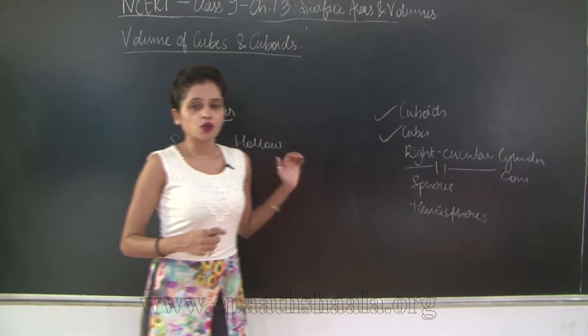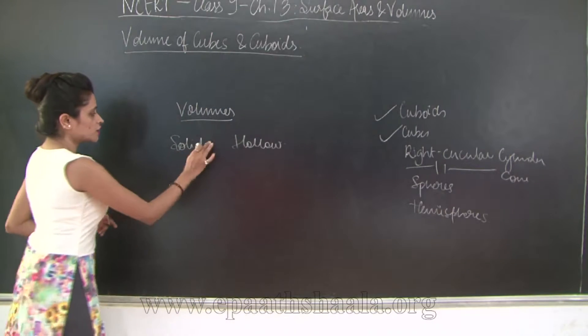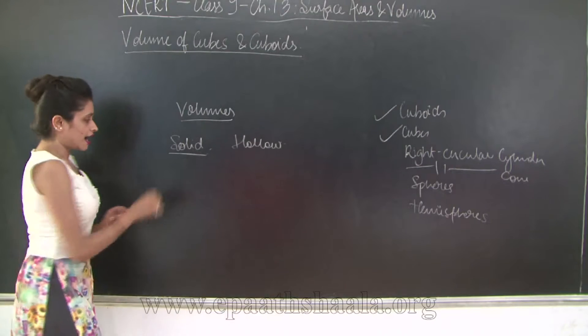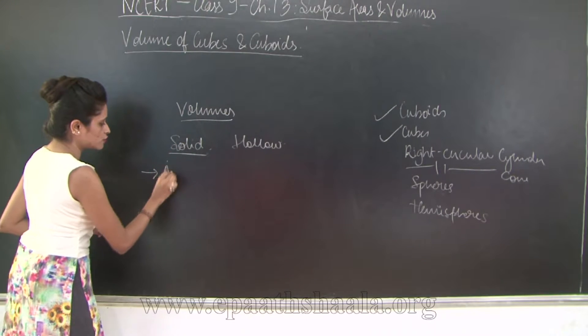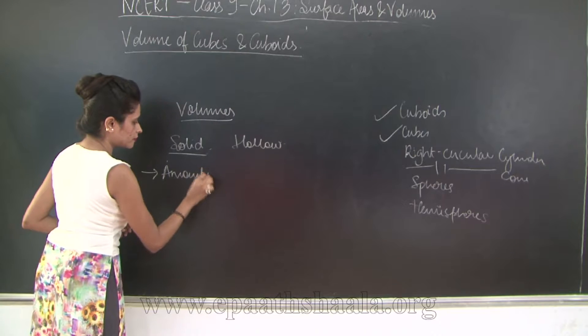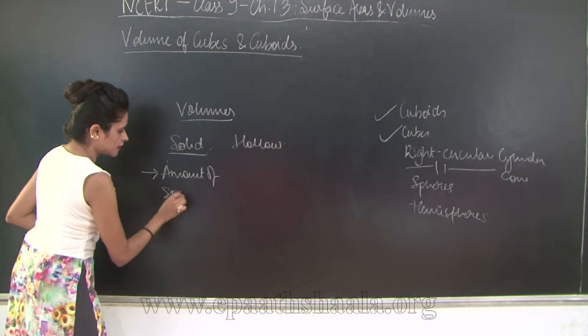And another example of a hollow object of sphere is take for example a ball. It is going to be empty inside. So what is volume?